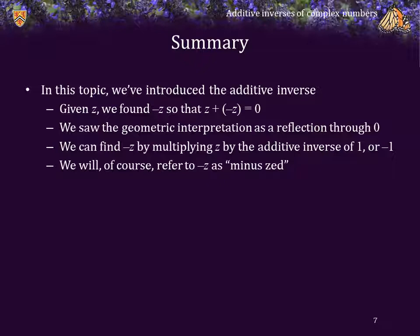In this topic we've introduced the additive inverse. Given z, we have found the additive inverse of z so that z plus its additive inverse is equal to zero. We saw the geometric interpretation as the reflection of the point z through zero. We also saw that we can find the additive inverse by multiplying z by the additive inverse of 1 — that is, multiplying by negative 1. We will always refer to the additive inverse of z as minus z.